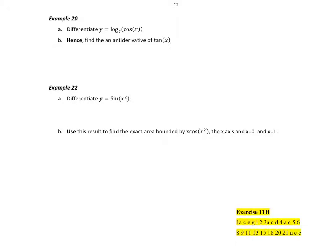This one says: first, differentiate y equal to natural log of cos x. So we have a chain rule. If I put u equal to cos x, then du/dx equals negative sin x. If y equals the natural log of u, then dy/du equals 1/u. Therefore, dy/dx equals negative sin x over u, which equals negative sin x on cos x, which equals negative tan x. So there's my derivative.